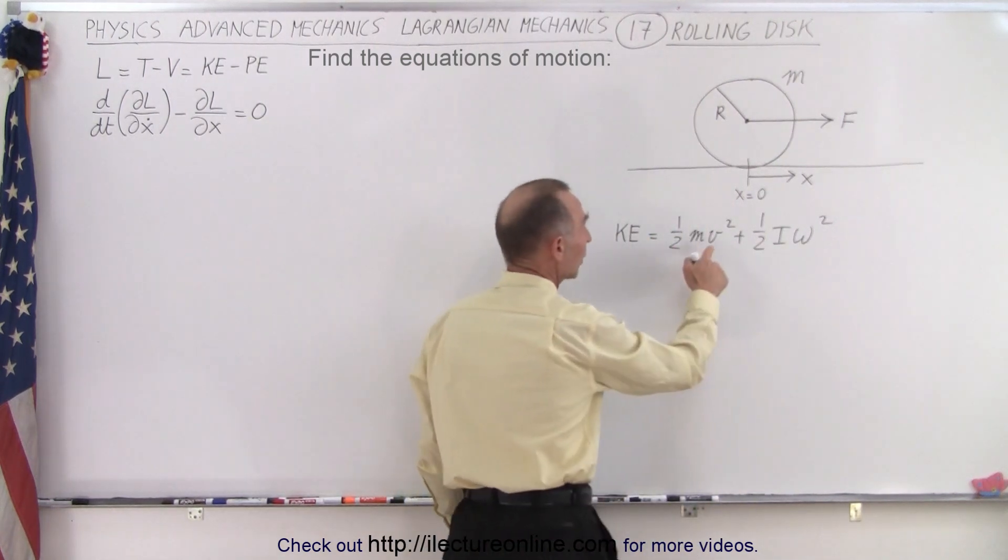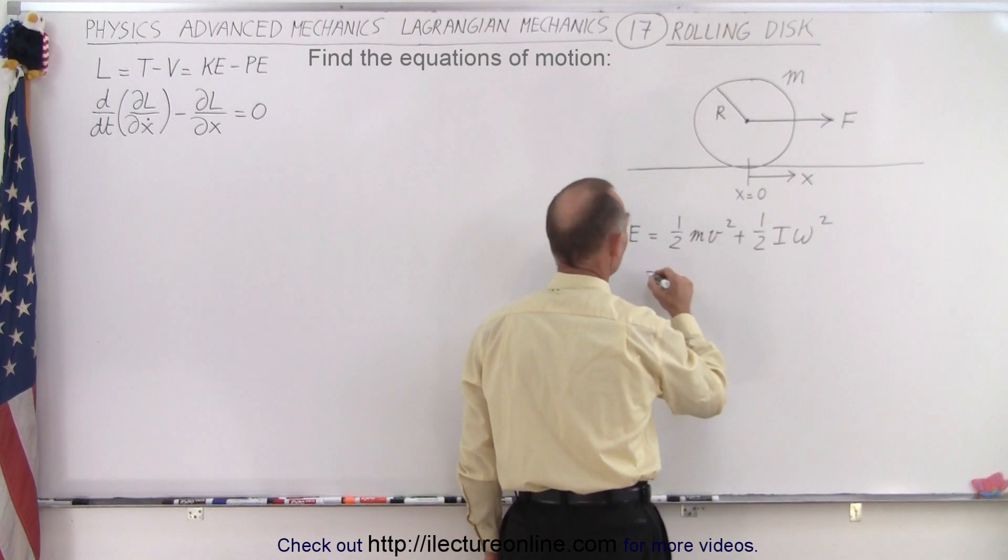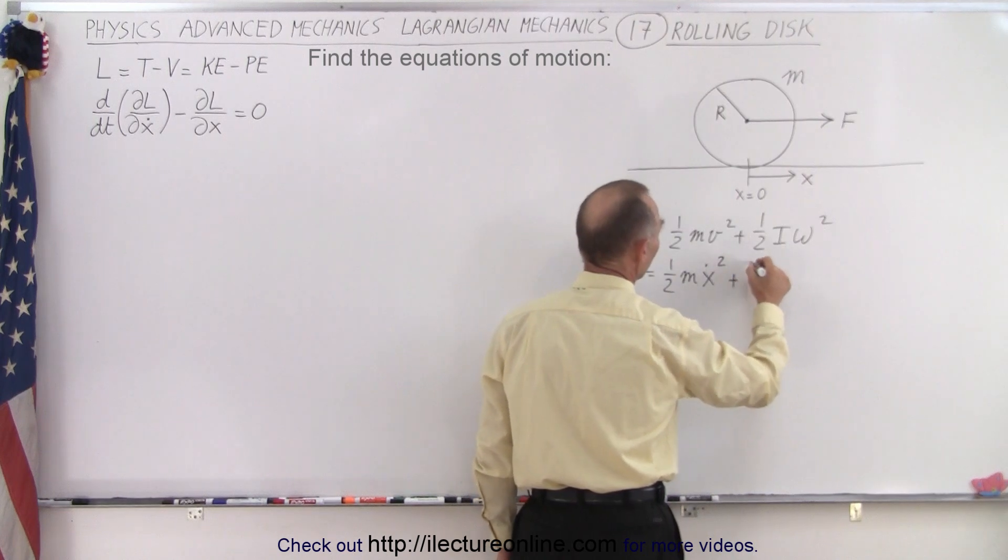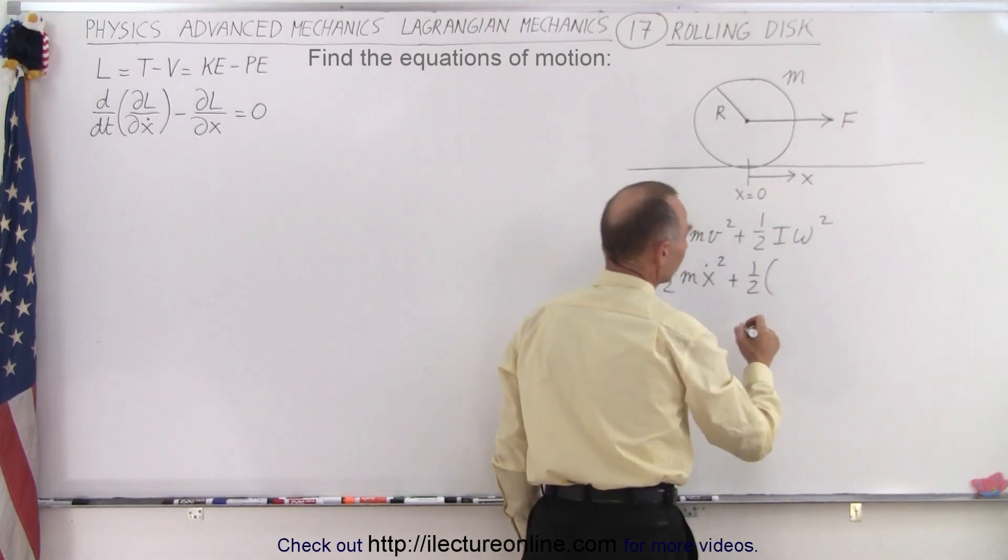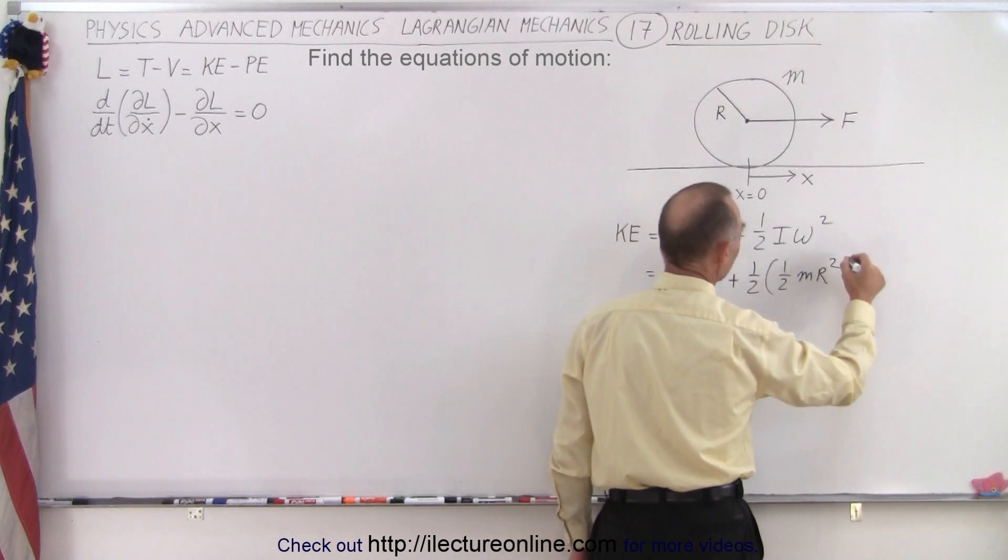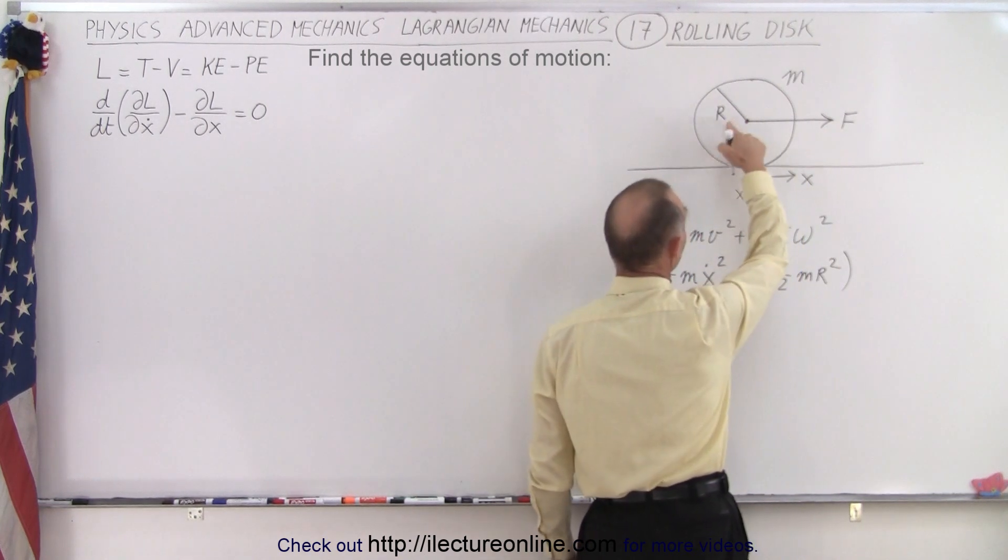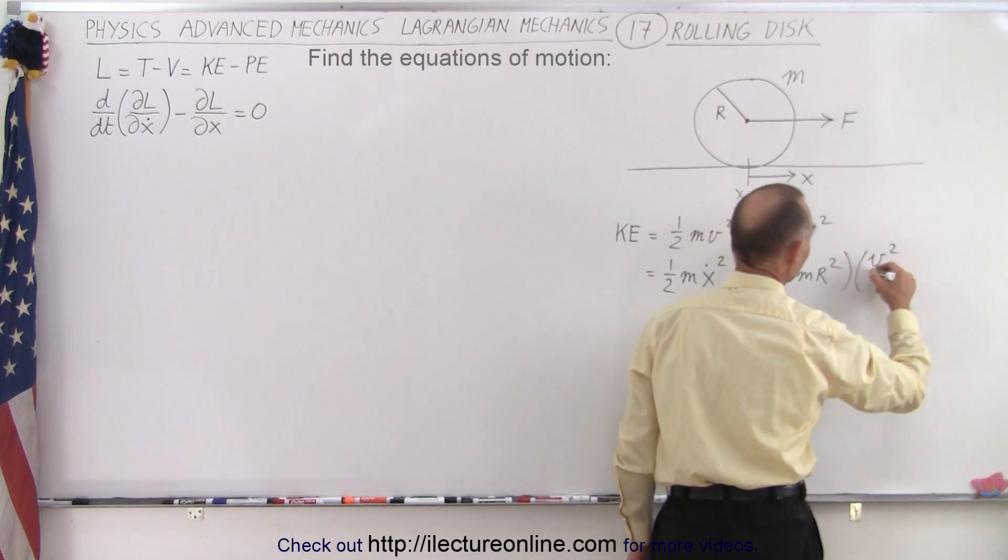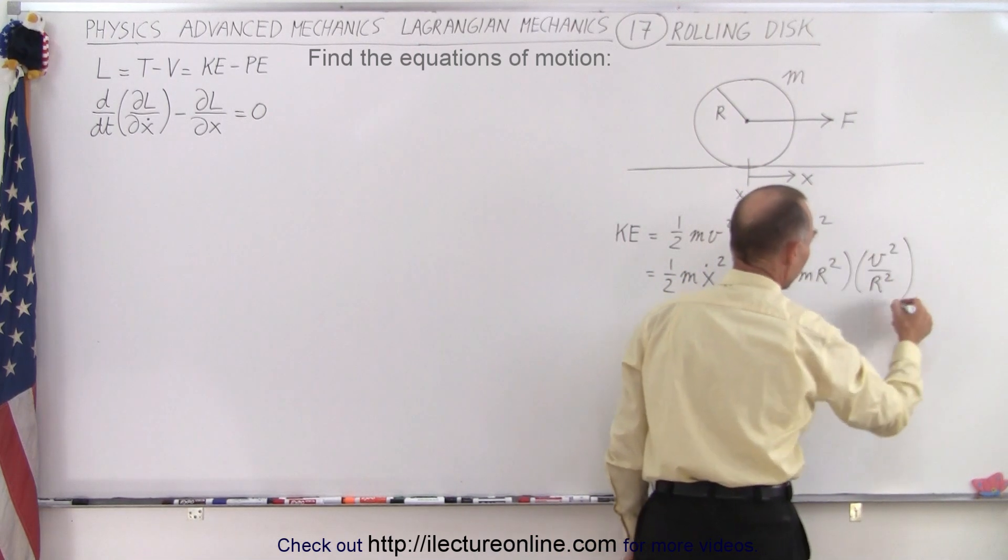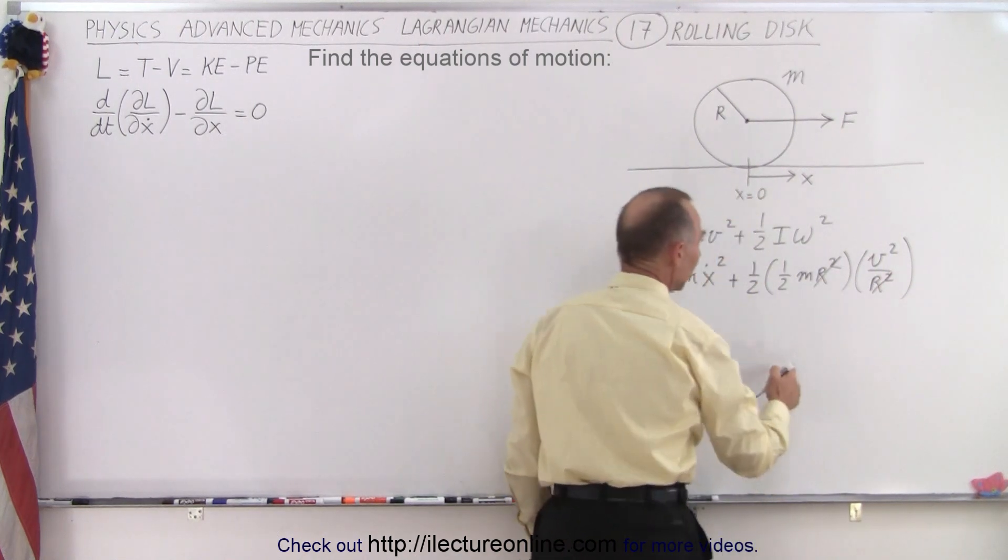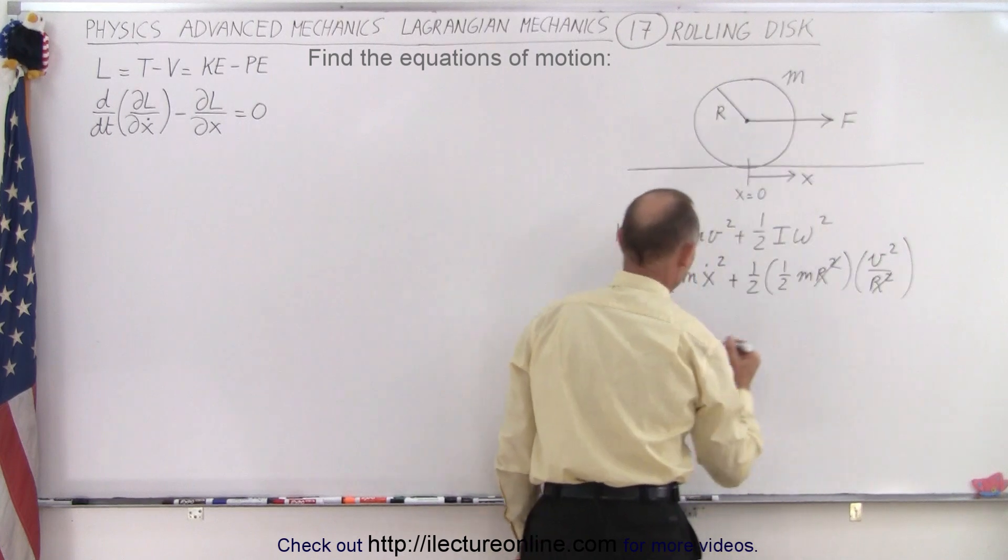Instead of writing V, we can write x dot, so this is equal to one-half M x dot squared plus one-half. The moment of inertia of a solid disc is one-half the mass times the radius squared. We're assuming we're given the radius and the mass, and omega can be written as V over R, so it becomes V squared over R squared. Right away you realize that the R squares cancel, and instead of writing V, we can write x dot.